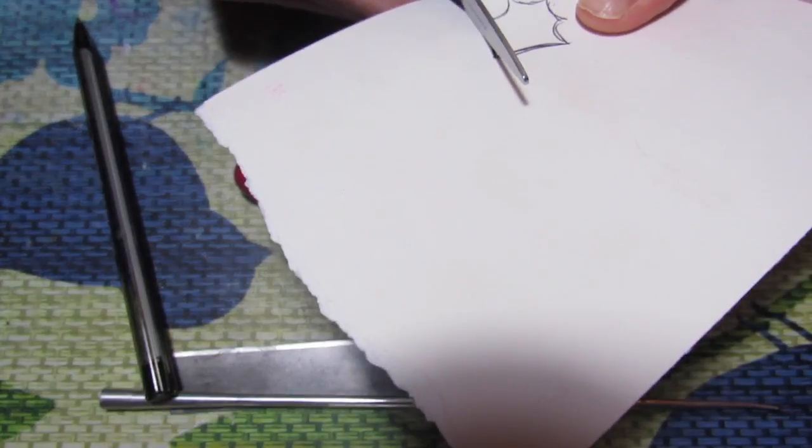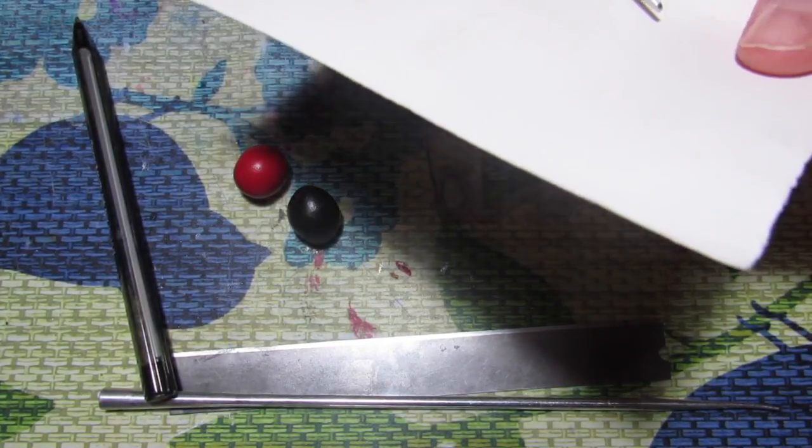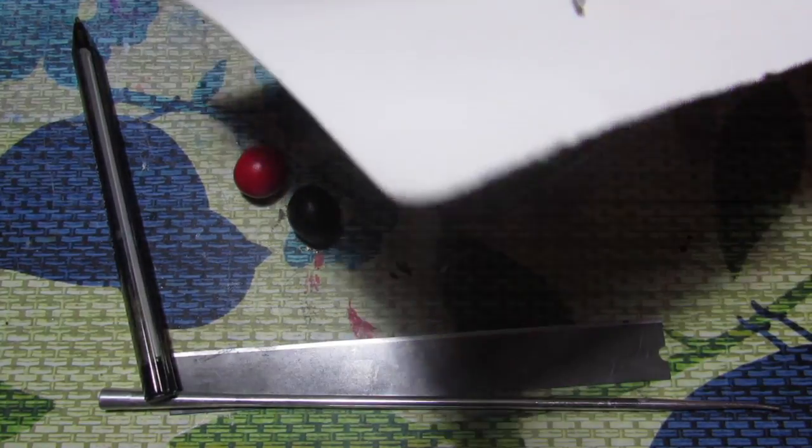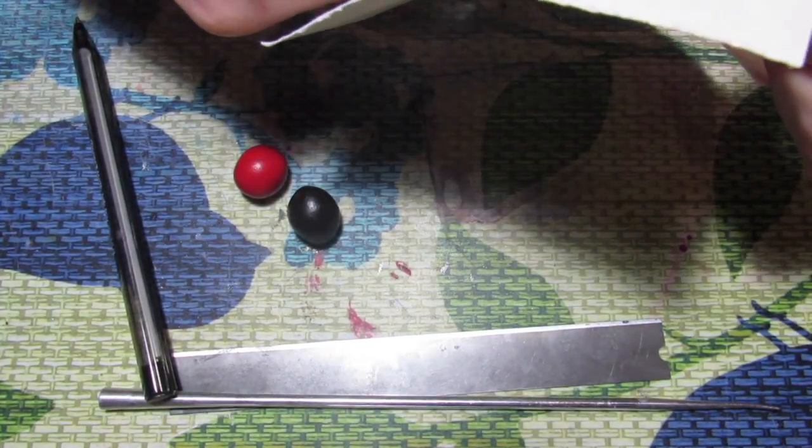To get started, first thing you're going to do is take a pen and a piece of paper and just draw out a little dragon tail shape. Look up some ideas if you want to and then you're just going to cut it out.